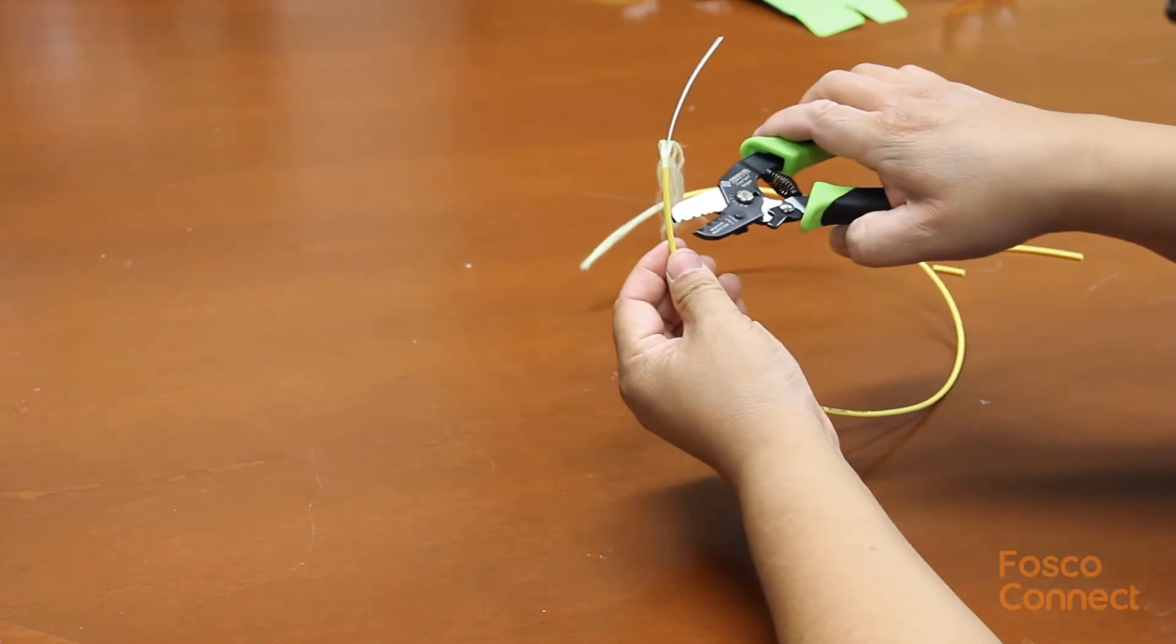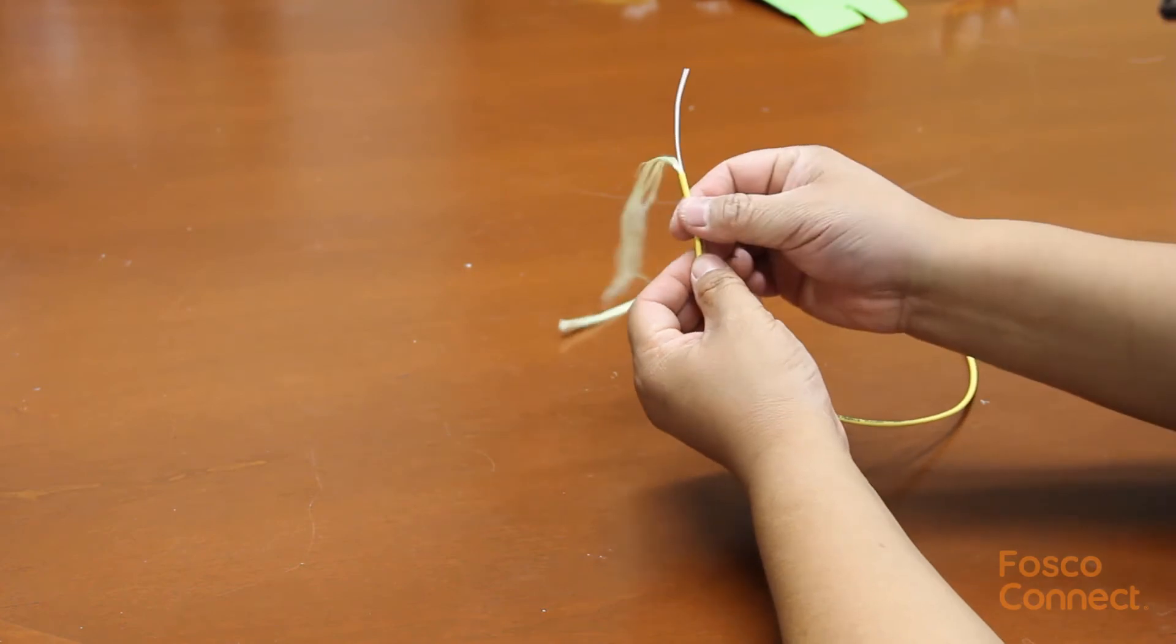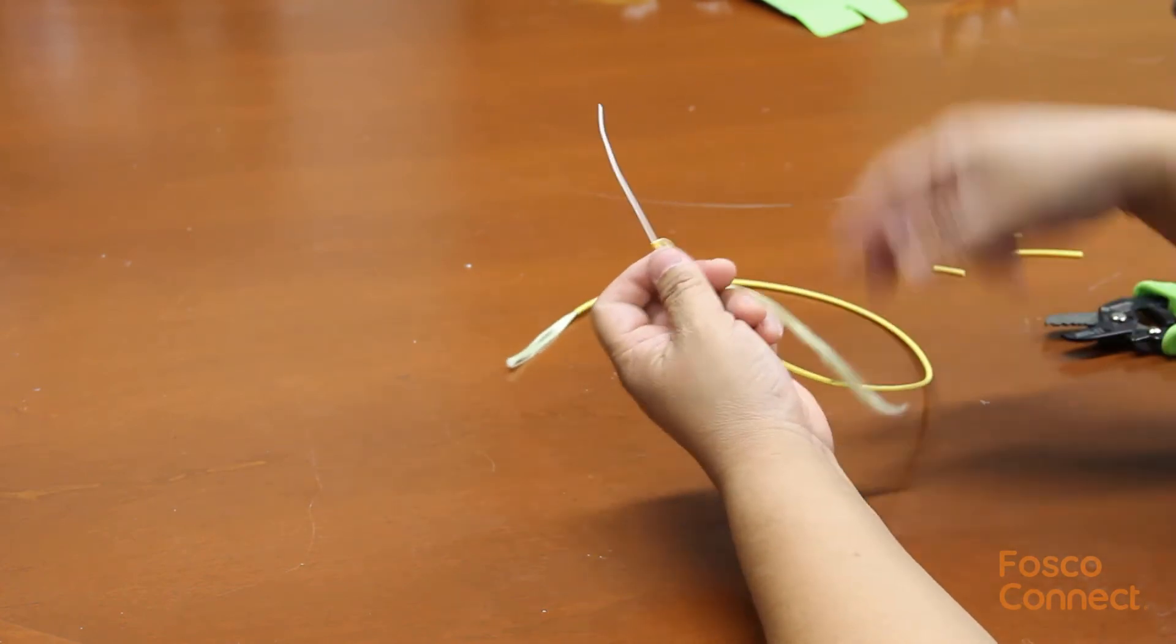To remove the 3mm outer jacket, we can use the first notch, 2.8 to 3mm outer jacket remover.